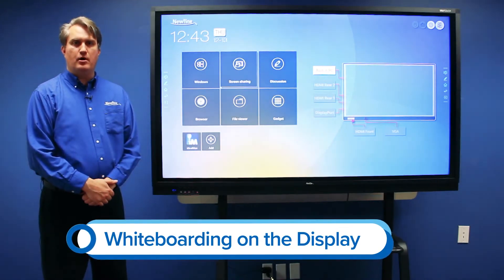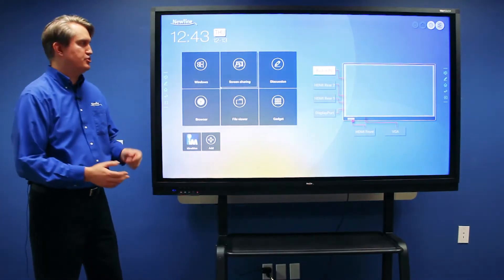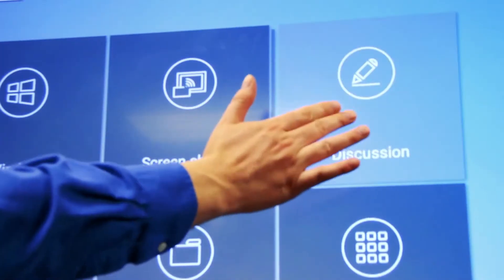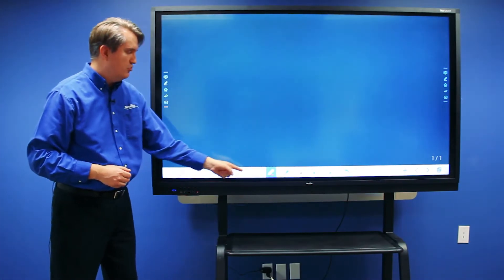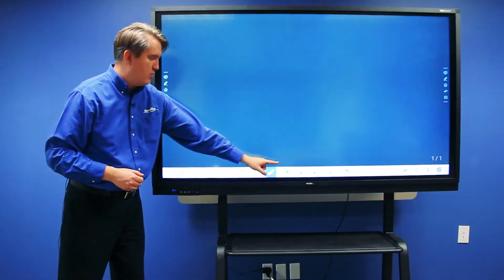To access the embedded whiteboard on the RS, there's a button labeled 'Discussion.' Touch that button and it opens the whiteboard. From here you can choose your writing utensil on the whiteboard toolbar. There's a pen as well as a highlighter.